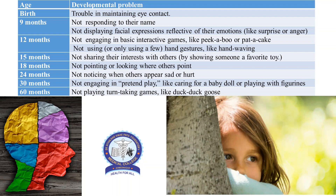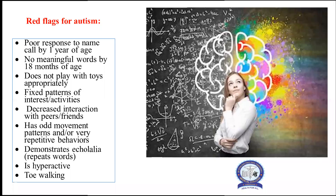These are the age-wise developmental problems in autistic children. At birth, there is trouble maintaining eye contact. At nine months, the child is not responding to his name and not displaying facial expressions reflective of emotions like surprise, anger, happiness, or sadness. At one year, the child is not engaging in basic interactive games like peekaboo or pat-a-cake, and is not using hand gestures like waving goodbye. At 15 months, the child is not sharing interest with others. At 18 months, the child is not pointing or looking where others point. At two years, the child is not noticing when others appear sad or hurt. At 30 months, the child is not engaging in pretend play like caring for a baby doll. At five years, the child is not playing turn-taking games like duck-duck-goose.